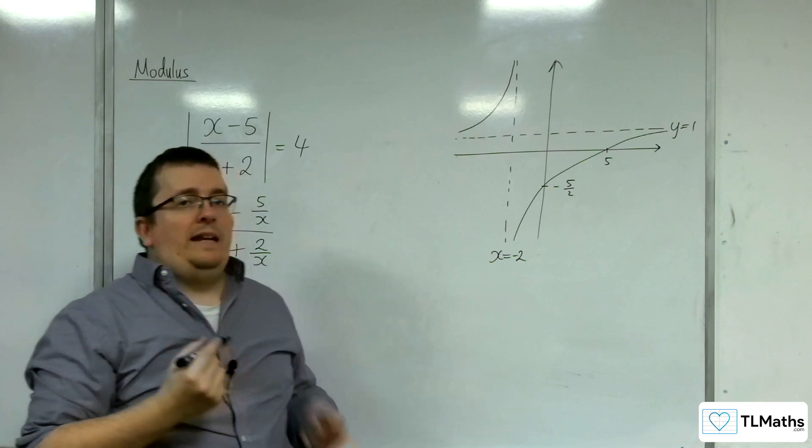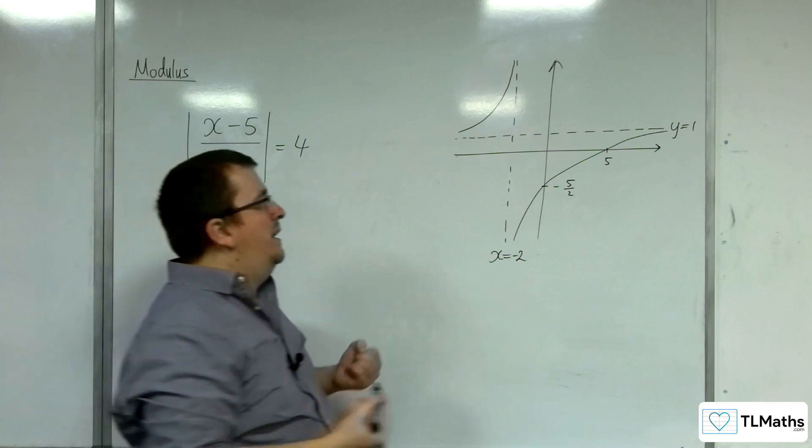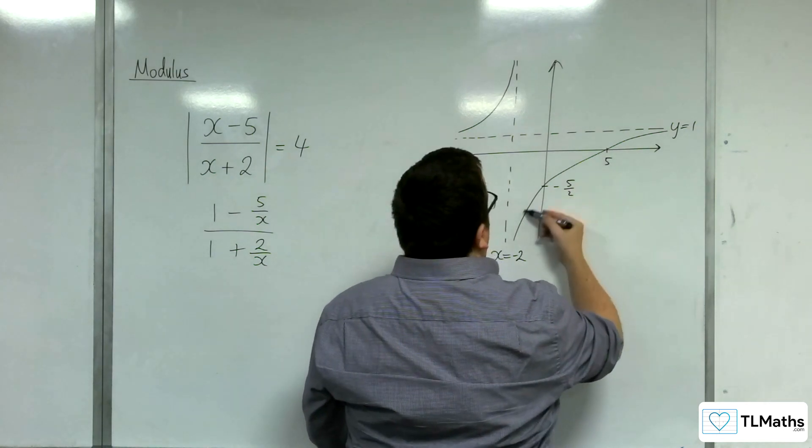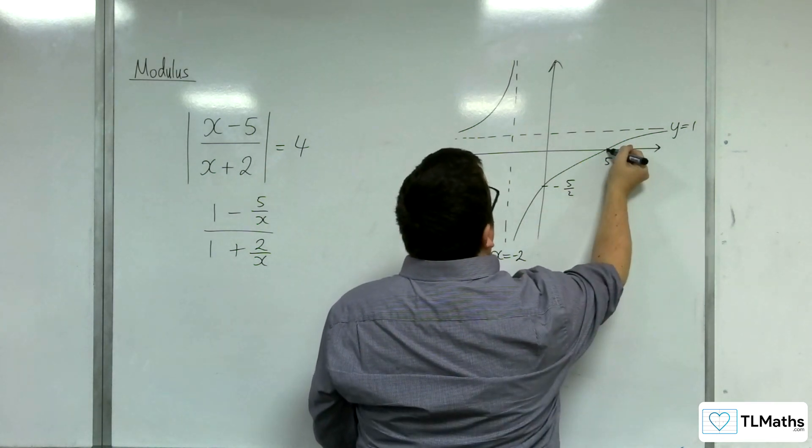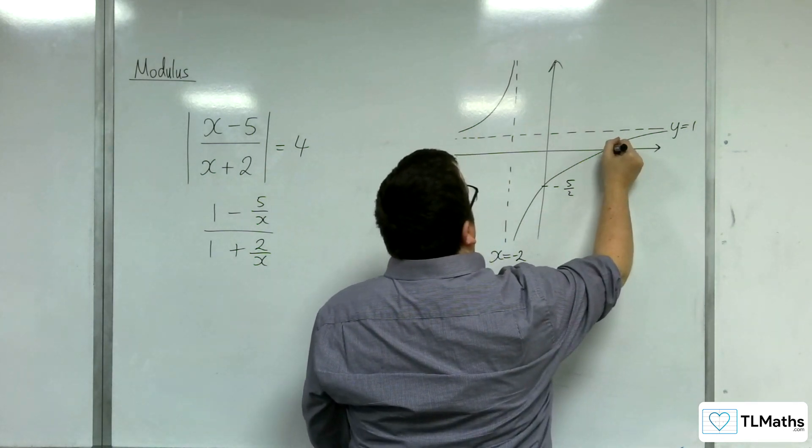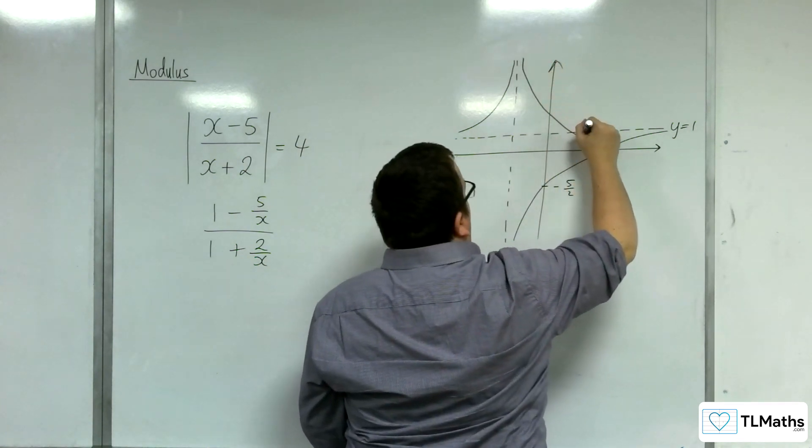Now, remember, anything that is below the x-axis will get reflected up. So, this piece of the graph is going to get reflected up, and will look like this.